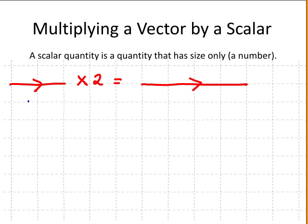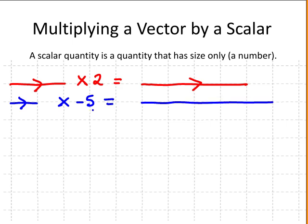Taking a second example, we multiply this vector by minus 5. Multiplying the vector by 5 makes its length 5 times longer. Since we multiplied by a negative scalar — minus 5 — the direction of the vector is reversed.